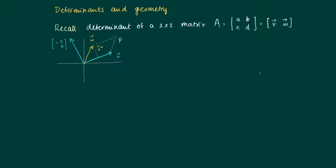I can make the following picture. Here I depicted V and W, and I can choose an orthogonal part to V which is minus C, A. Then the determinant of A is the inner product of minus C, A — the vector in blue perpendicular to V — with W, which is B, D.